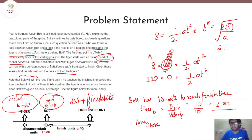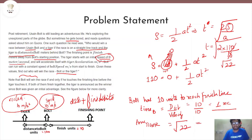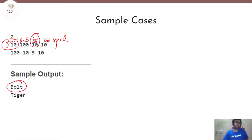So we compute 2 × 110 divided by Tiger acceleration of 10 meters per second squared, giving us √22 for the Tiger's time. Since 4² = 16 and 5² = 25, √22 is around 4-point-something seconds. Bolt reached the finish in just 1 second, so Bolt strictly finishes before the Tiger. Therefore, for the first test case the output is 'Bolt'.